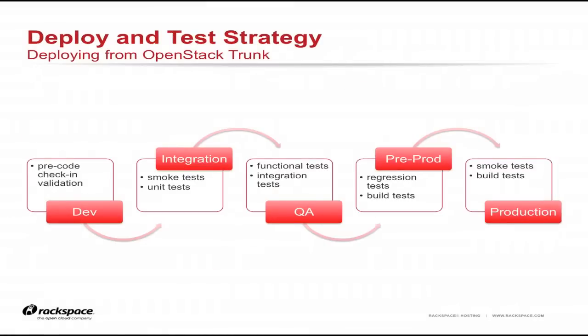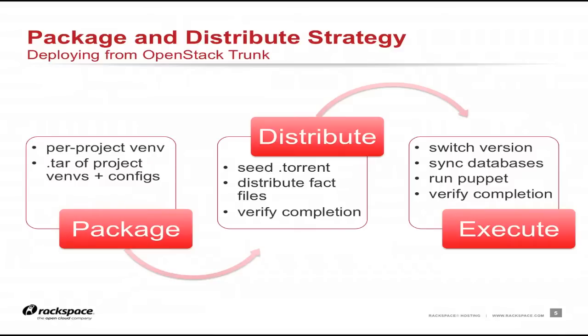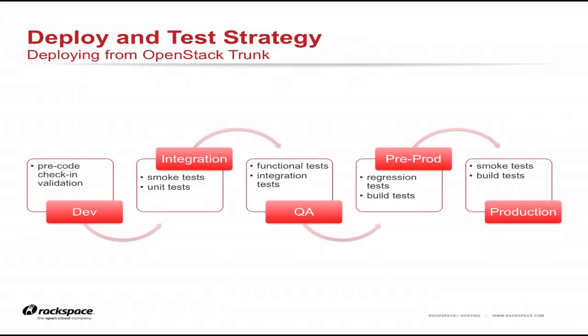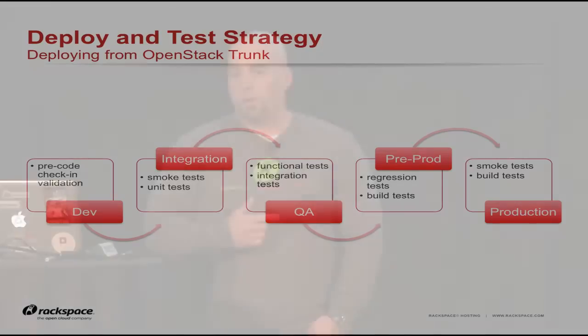This is our development and deployment pipeline. The distribute and execute steps happen in every one of these environments. Development is where our developers do their work. Integration is our continuous integration environment where we run smoke tests and unit tests. If everything works there, we promote to the QA environment for functional and integration tests between components and internal Rackspace products. If everything's ready to roll, we deploy to pre-production and focus on regression testing. Once we confirm everything passes our full test suite, we tag it for release.